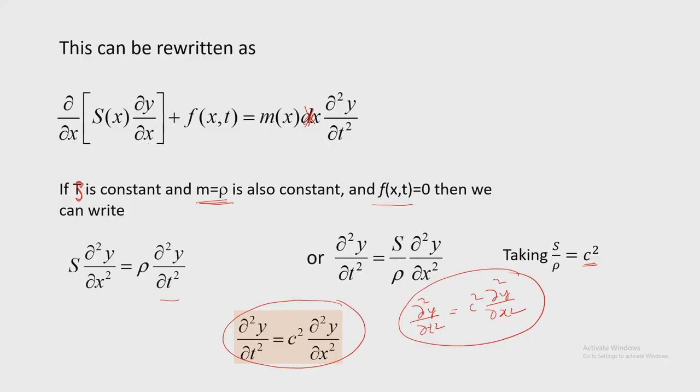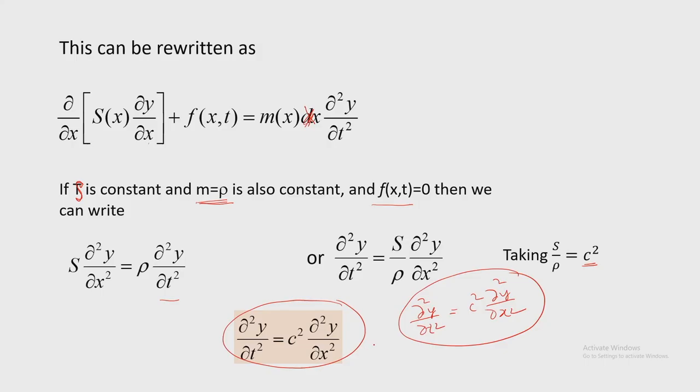The string is assumed to be a continuous system having distributed mass instead of discrete mass used earlier. In the limiting condition, when the distance between two masses Δx tends to 0, we get this partial differential equation — and here we again get the same equation as the wave equation.